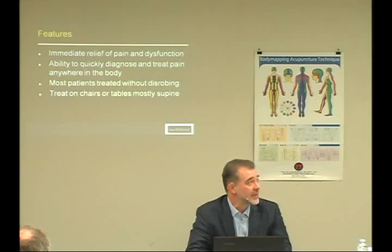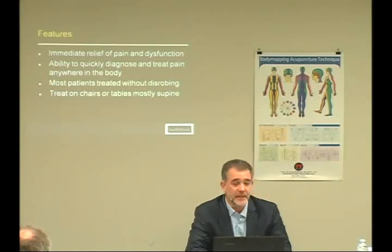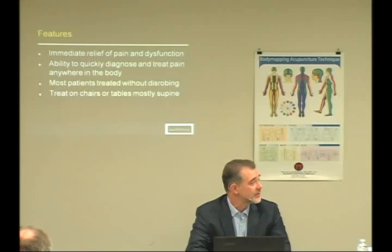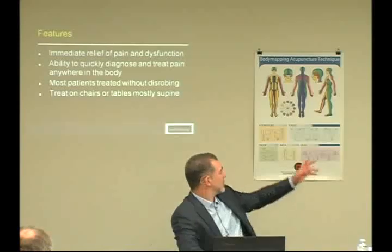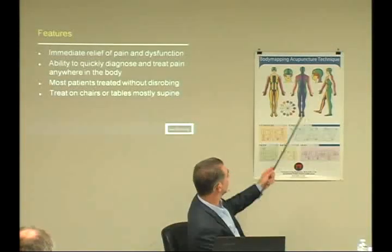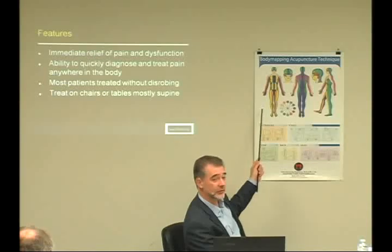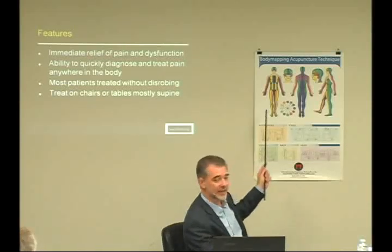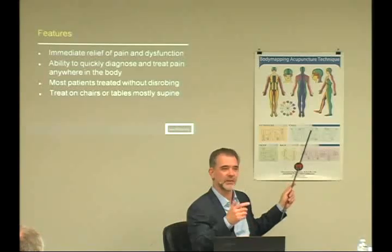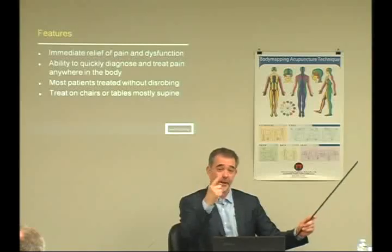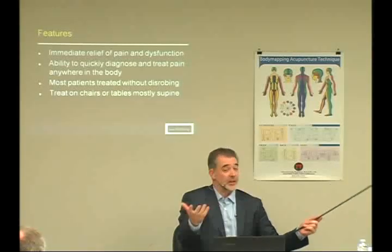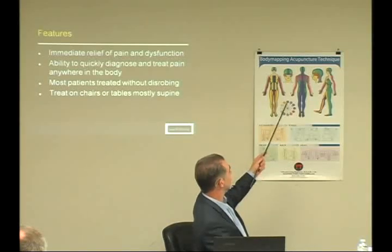Some features of this technique include immediate relief of pain and dysfunction—including numbness, tingling, skin irritation, rash, swelling. We can quickly diagnose and treat pain anywhere. With the chart, if a patient can point to it, I can treat it. If they can't point to it, we don't know what we're treating. Sometimes patients say it hurts everywhere, but we're looking for them to use one finger—they might point to five locations, and then we're treating five spots.